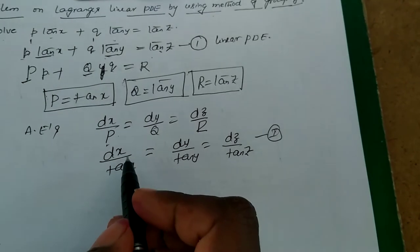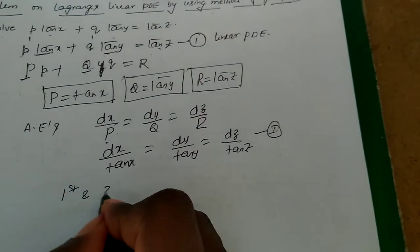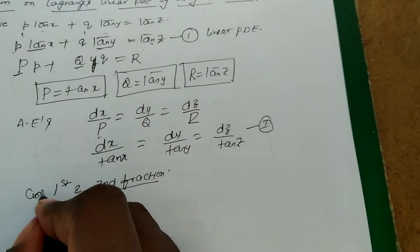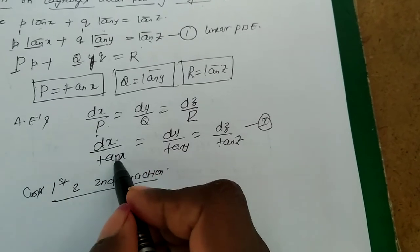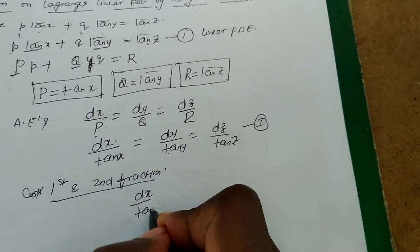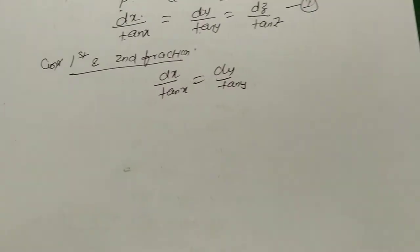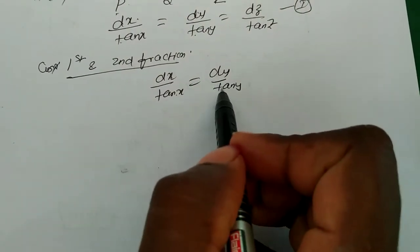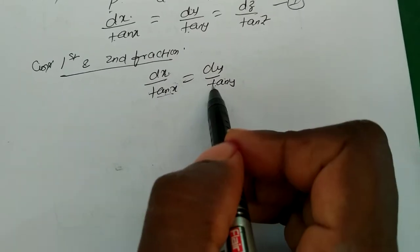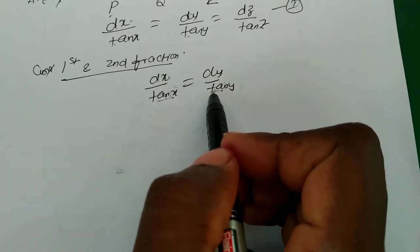From this we need to consider two fractions. First we consider the first and second fractions for grouping. We check: it is possible to group dx by tan x equal to dy by tan y, because the denominators tan x and tan y do not contain z. So we can group and find the solution from these two fractions.